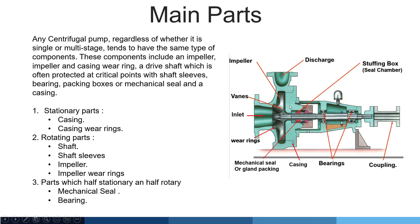Stationary parts: the casing is stationary, and casing wear rings are also stationary parts. Rotating parts: obviously the shaft, shaft sleeves, impeller, and impeller wear rings are rotating parts. Mechanical seals and bearings are parts which are half stationary and half rotating.